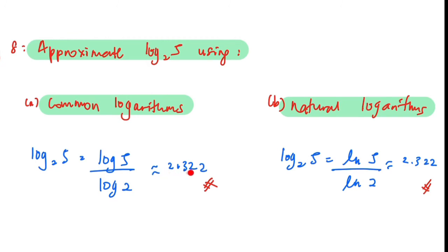For the next one, you can also use natural logarithm. For example, this is log base 2 of 5, so in your numerator it's just ln of your argument, and in the denominator is the ln of the base, which is ln 2.